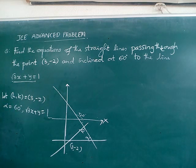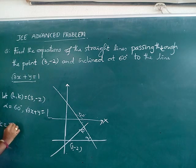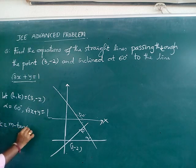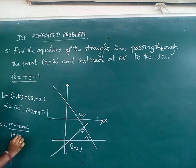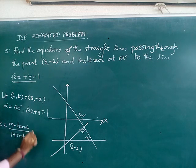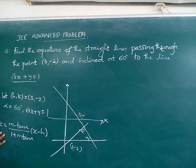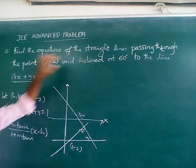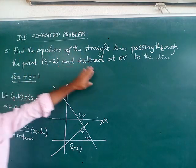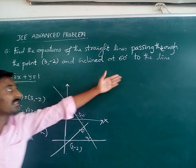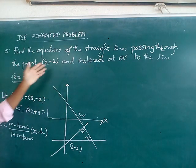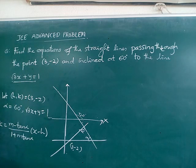As we know, the equation of the required straight line is given by y minus k equal to (m minus tan alpha) by (1 plus m tan alpha) into (x minus h). It is a very simple formula. How to find equation of a straight line passing through a given point h comma k and making an angle of alpha with the line ax plus by plus c equal to 0.